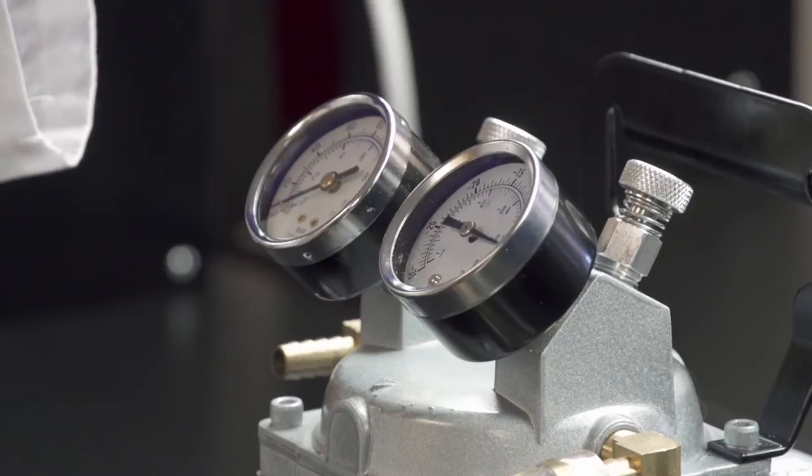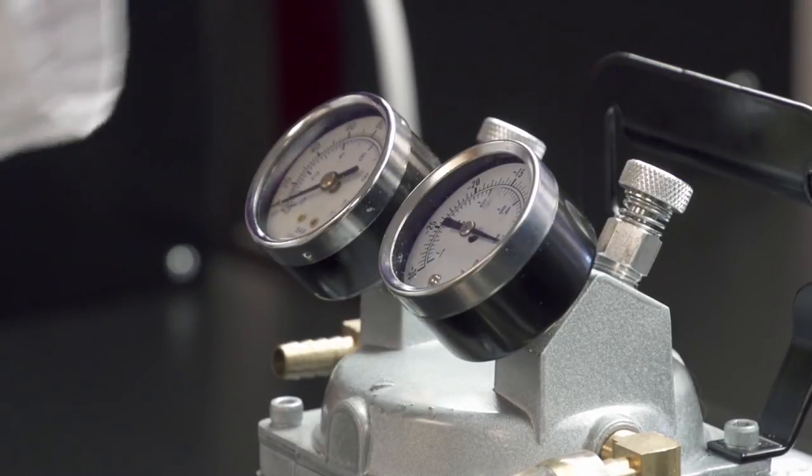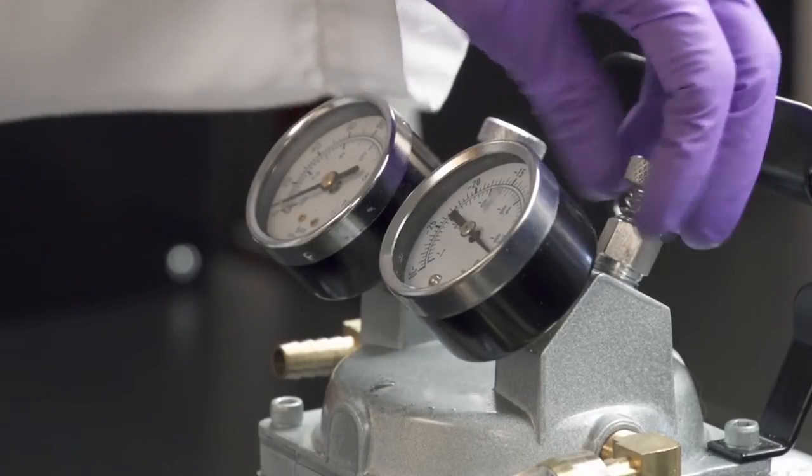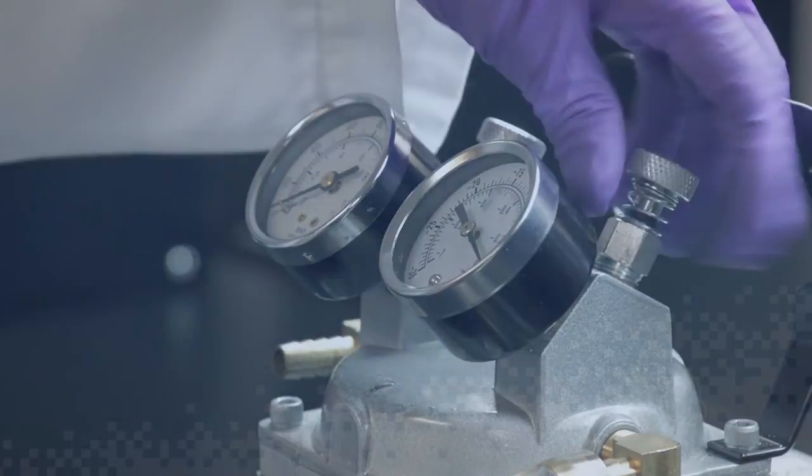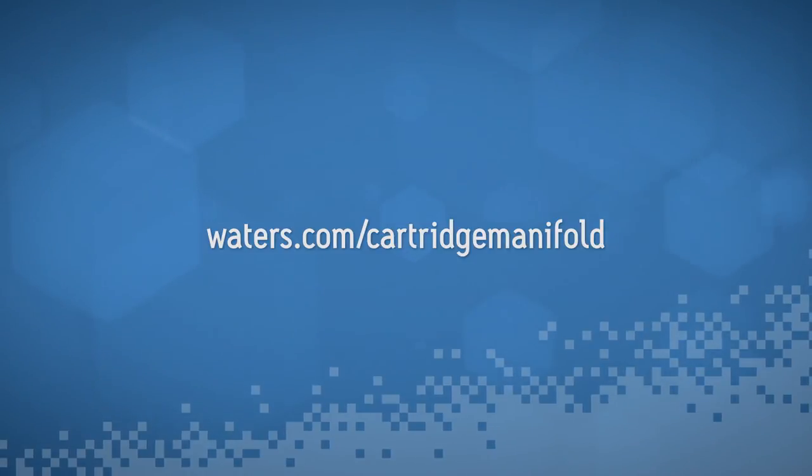Once all the liquid has been drawn through the cartridge, adjust vacuum to zero and turn off the vacuum pump. For more information on Waters 20 position cartridge manifold or to order, go to waters.com slash cartridge manifold.